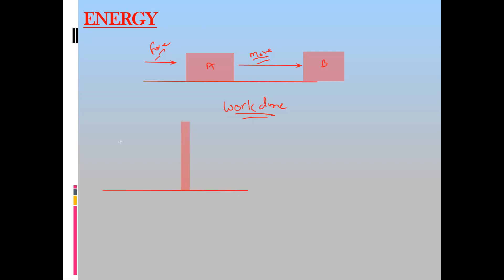For example, if this is a wall and I'm applying force on the wall but the wall does not move, is there any work done? There is no work done, because I'm applying force but I'm not able to move this object. The work done is zero. It means I have energy, but I don't have sufficient energy to do the work.